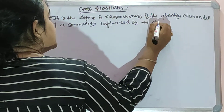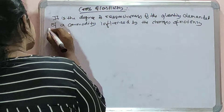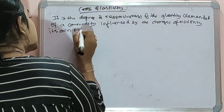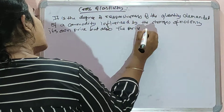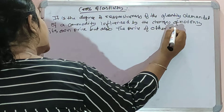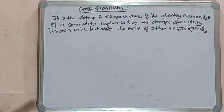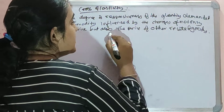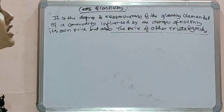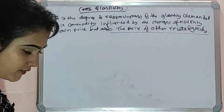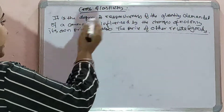Cross elasticity refers to the quantity demanded of a commodity being influenced by changes not only in its own price but also the price of other related goods. This has to be kept in mind — other related goods. If the goods are not related, the commodity will not be affected. Therefore, cross elasticity of demand is defined as a percentage change in the quantity demanded of a commodity with respect to the change in the price of the related commodity.